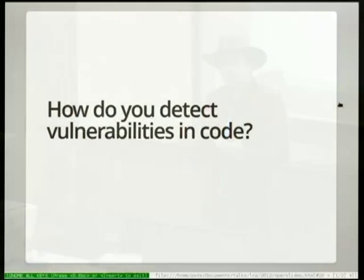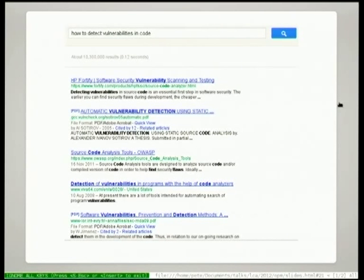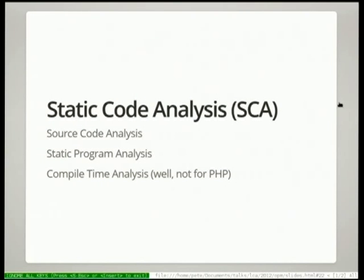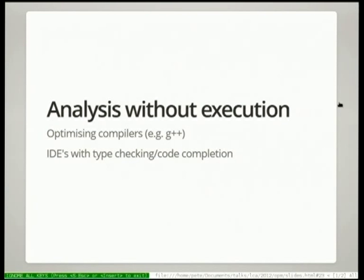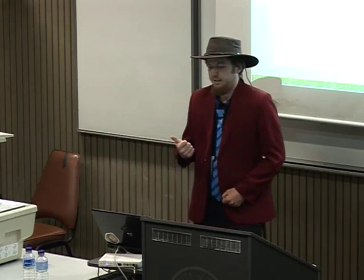So I was thinking: how do I go about detecting vulnerabilities in code? I asked myself and found the answer with a web search engine. I didn't have to read 10,300,000 pages to see that static code analysis is a viable solution to find vulnerabilities in your code. Static code analysis is something you've probably come across before if you've used an optimising compiler or even a text editor that does syntax highlighting. It's looking at your code without executing it and trying to find out what different parts of it mean. The first step is lexical analysis.